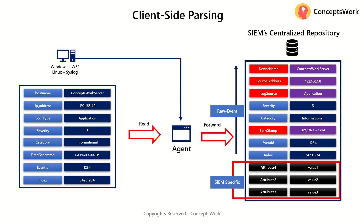As I mentioned in my last video about data storage, there is an aspect called SIEM-specific attributes, which is referred to as metadata. This is how your actual raw event looked on your machine, but when ingested into your SIEM centralized repository, it includes any attribute mapping done for specific attributes, as well as additional SIEM-specific attributes which are also populated.